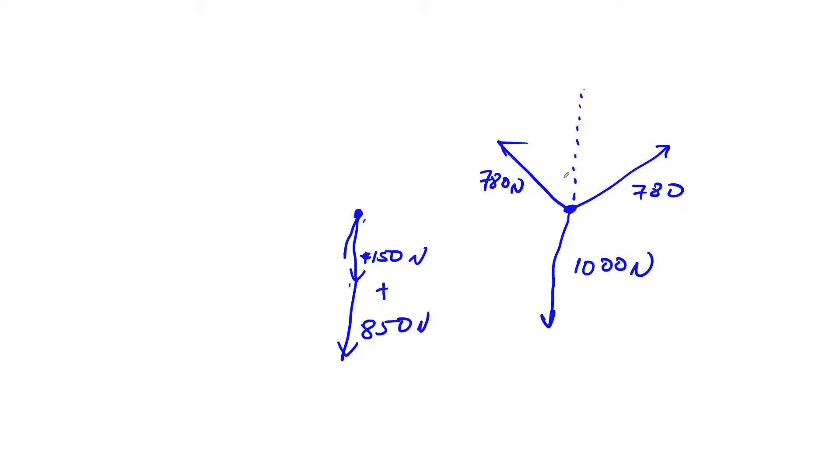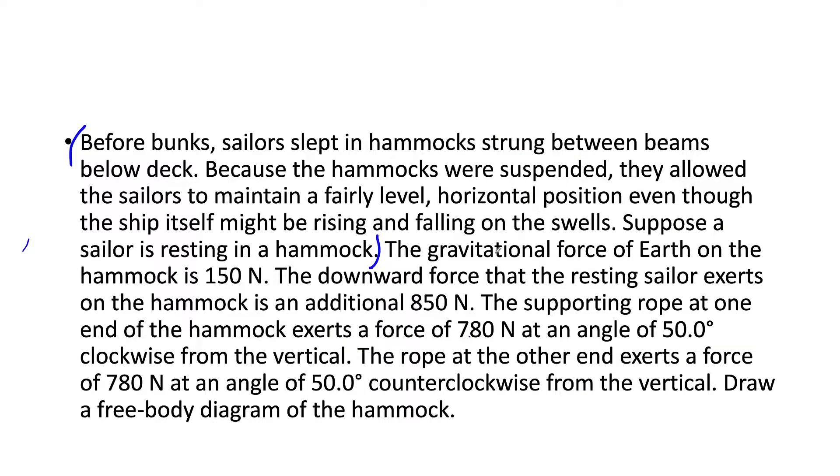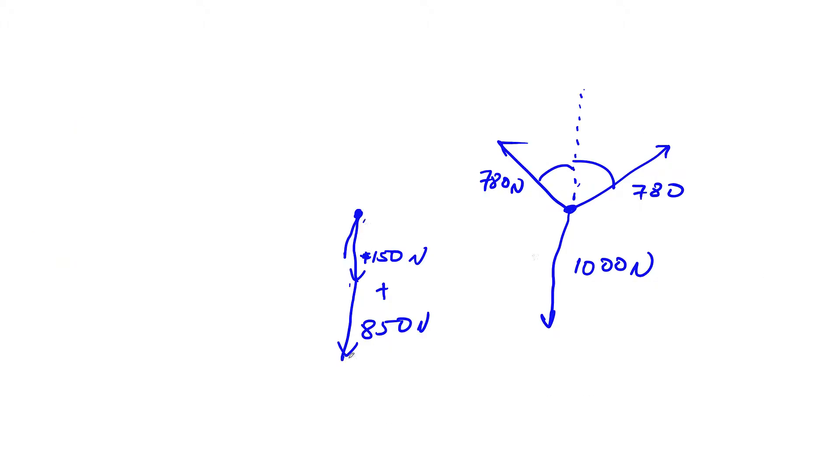You don't have to be perfect with these drawings guys. You just need to get an idea of what's happening. And we've got two angles here. You notice that one supporting rope exerts a force of 780 at an angle of 50 degrees clockwise from vertical. So again it's 50 degrees.